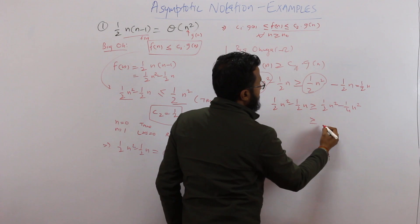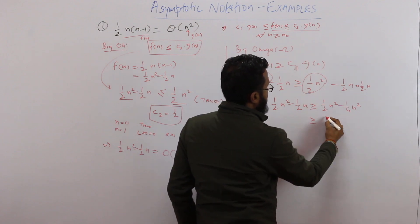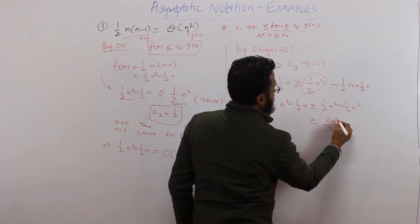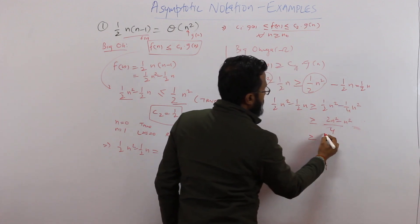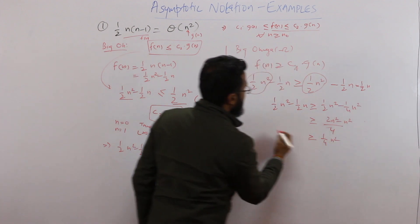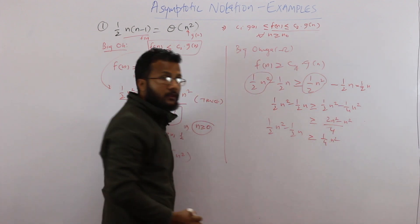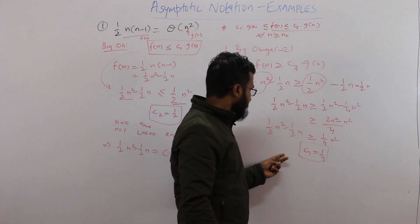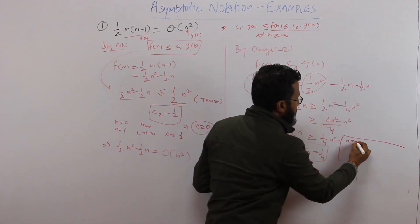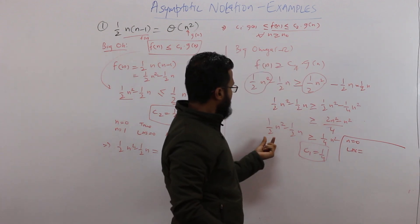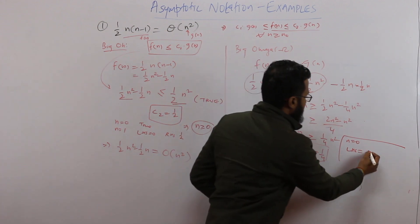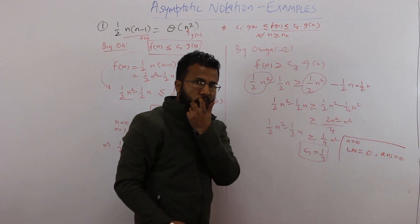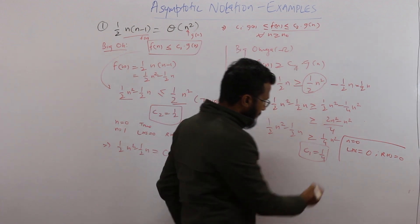Simplifying: ½n² minus ¼n² gives us ¼n². So the value of c1 is ¼. Now let's find the value of n₀. For n=0, LHS = 0 and RHS = 0, which seems true. But let's also try n=1: LHS = ½ - ½ = 0, and RHS = ¼ × 1 = ¼. Since 0 is not ≥ ¼, this is not true for n=1.